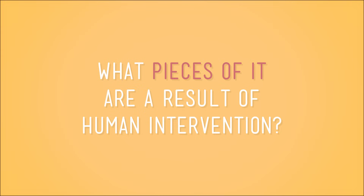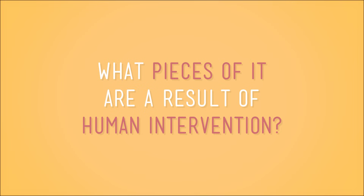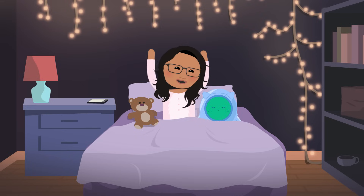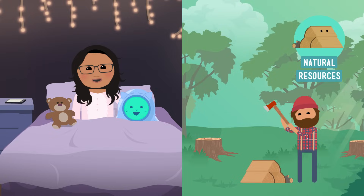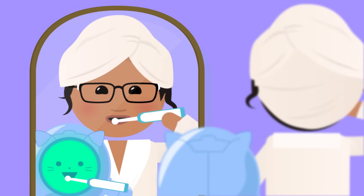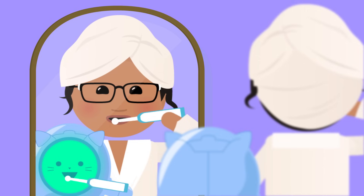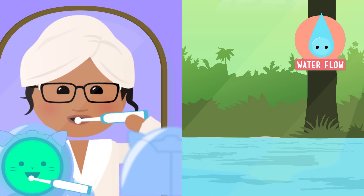Our effects on the environment are almost so obvious that we might actually miss them. But they're important to consider. Think about your life — what pieces of it are a result of human intervention? Let's walk through your day. In the morning, you wake up in bed in a home that's made from natural resources, like wood, taken from other parts of the world and shaped by people. You gotta brush your teeth, and the water coming out of your tap is a result of humans changing the water flow. Your water probably came from a river or an aquifer a few miles away — that water didn't naturally flow into your home; it was directed there by people.